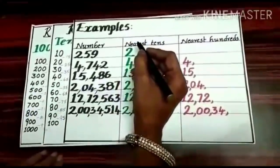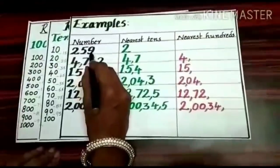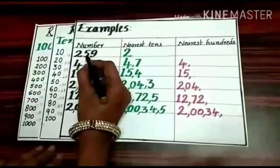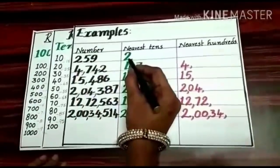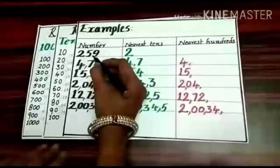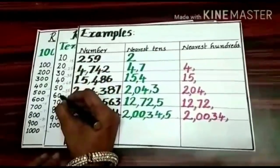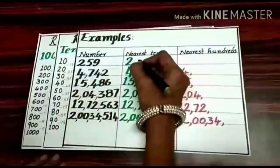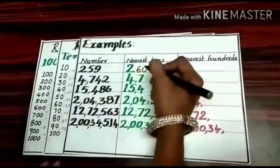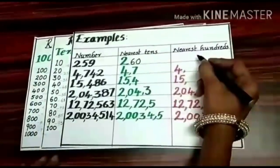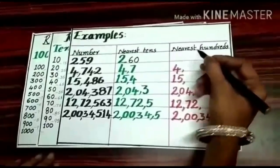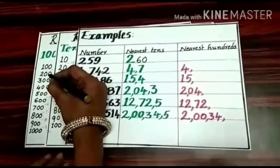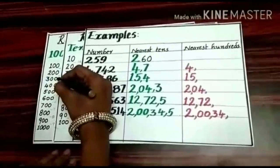See here a few more examples. First number: 259. We have to round up to the nearest tens, so we consider up to the tens place only — the hundreds digit stays as it is. Now round 59 to the nearest 10: 59 lies between 50 and 60, and it is more than the middle number, so round up to the next 10 — that is 60. Now for nearest hundreds: 259 lies between 200 and 300, and it is more than the middle number, so round up to the next 100 — that is 300.